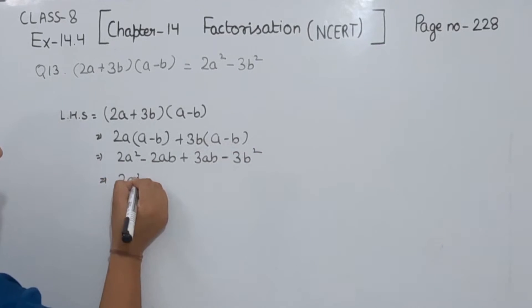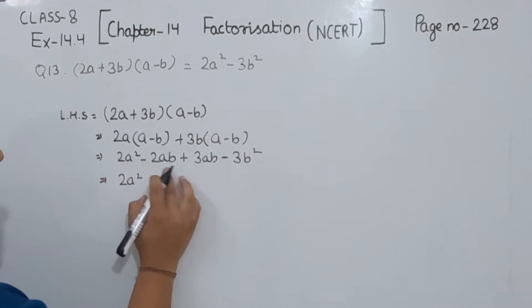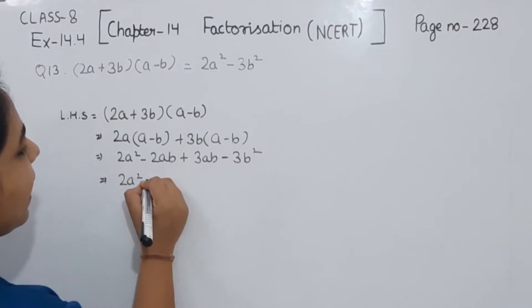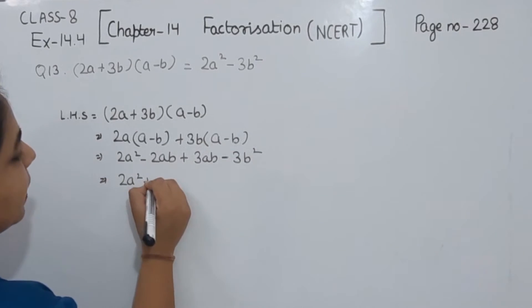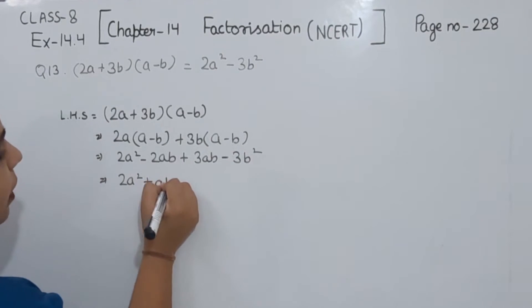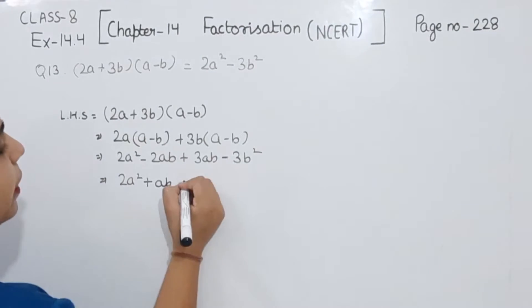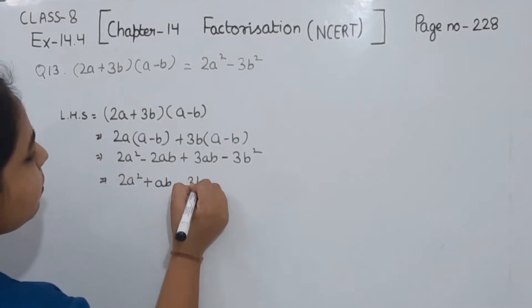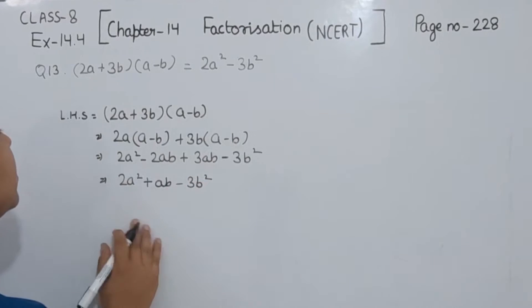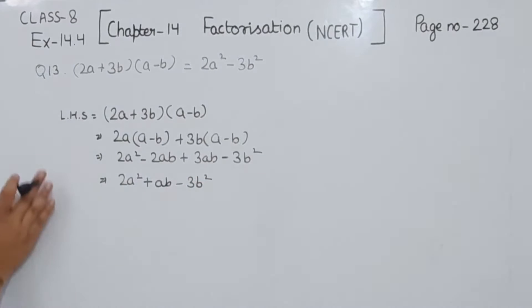Simplifying, we get 2A² + AB − 3B². So this is what we get when we solve the left hand side.